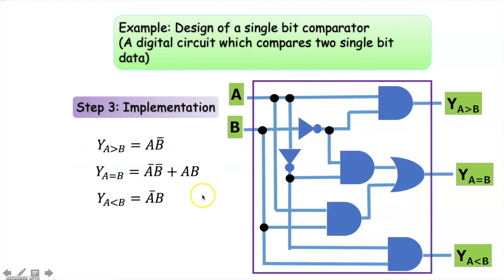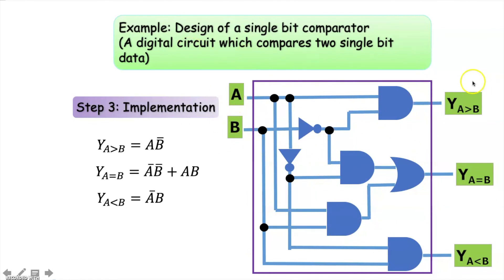Now the final step: we have to implement these logical expressions using logic gates. Here you can see the box for a single-bit comparator with its inputs and outputs implemented using logic gates. We will have some more interesting examples in the next part on combinational circuits. Thank you very much for watching.